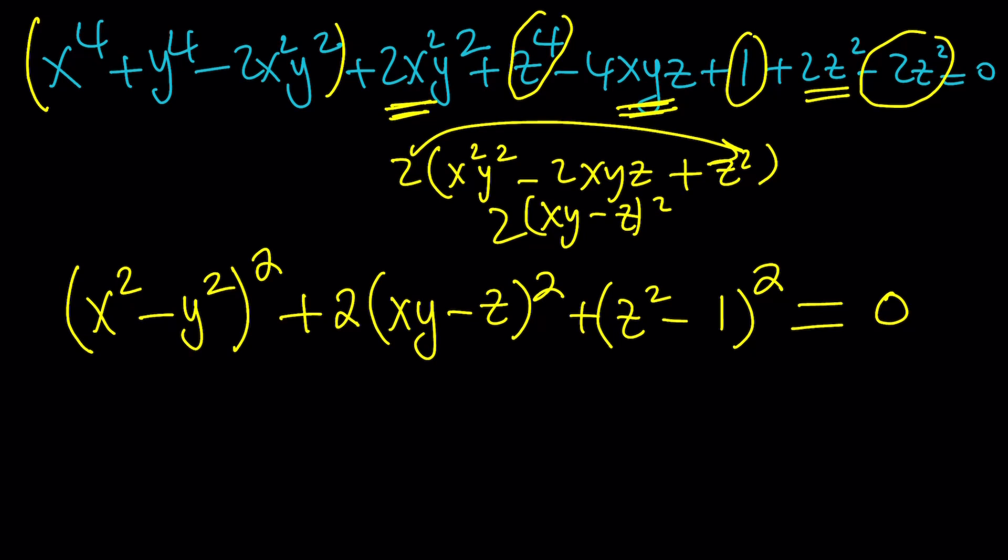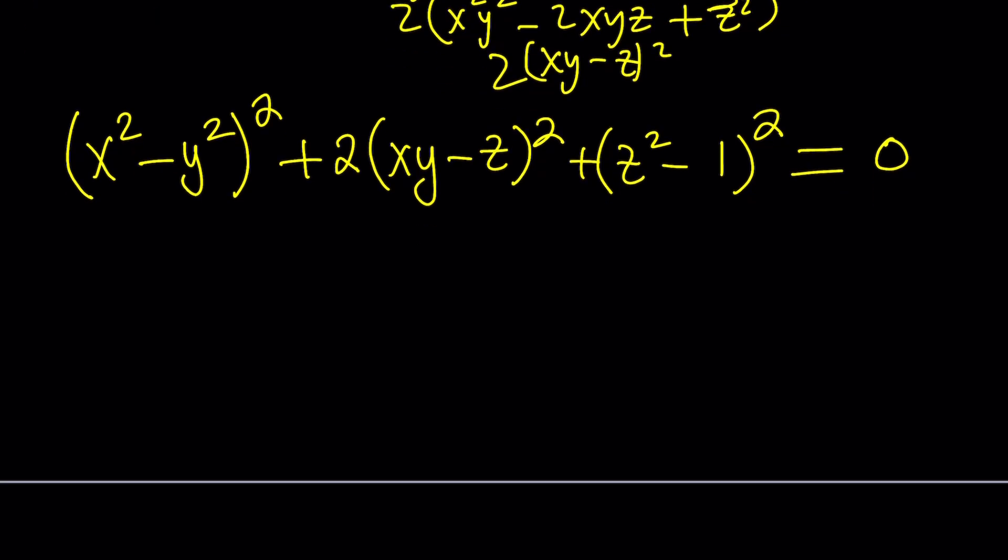And everything else is 0. So that's equal to 0, which is nice, because now we can talk about, and of course, x, y, z are real numbers. Did I not say that? x, y, z are real. Otherwise, we're in big trouble. So if the sum of squares is 0, and all these quantities are real, then we only have one option, which is every term needs to be 0.